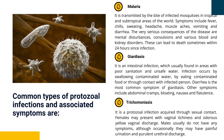Giardiasis is an intestinal infection which is usually found in areas with poor sanitation and unsafe water. Trichomoniasis is a protozoal infection acquired through sexual contact. Females may present with vaginal itchiness and odorous yellow vaginal discharge.